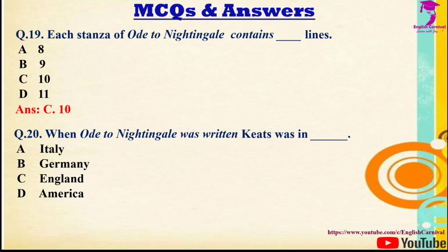Question 20: When Ode to a Nightingale was written, Keats was in — Options: A) Italy, B) Germany, C) England, D) America. The correct answer is C — England.